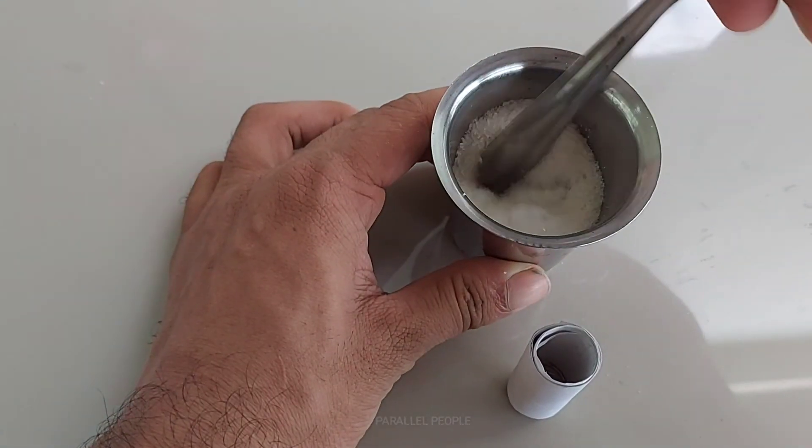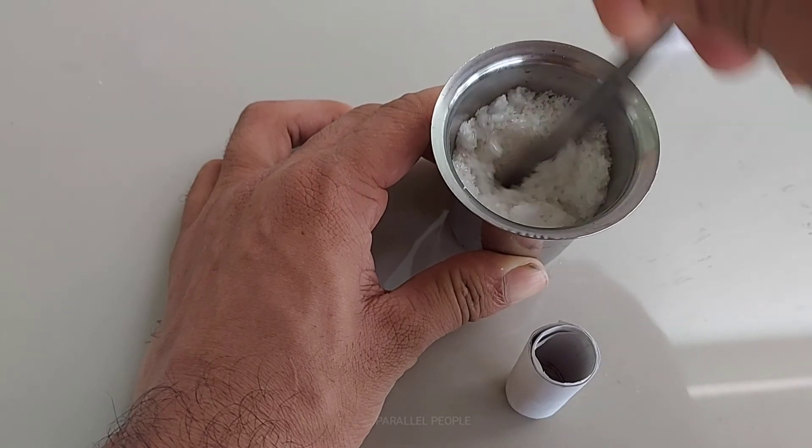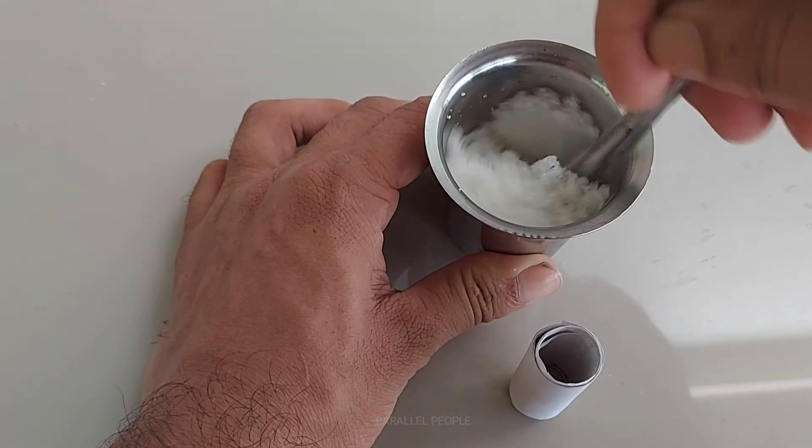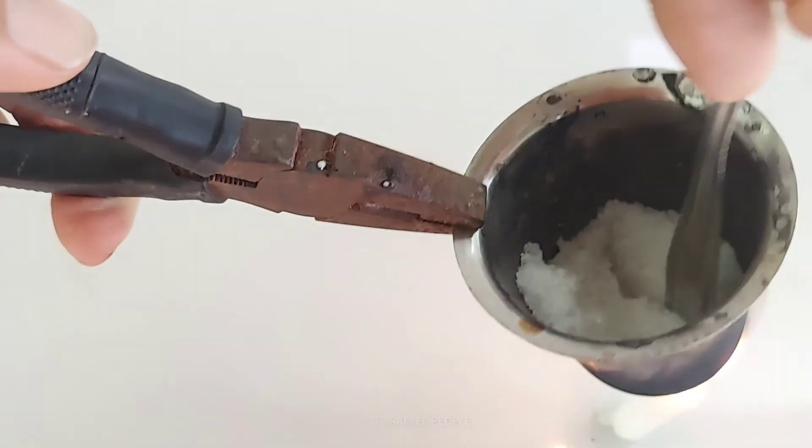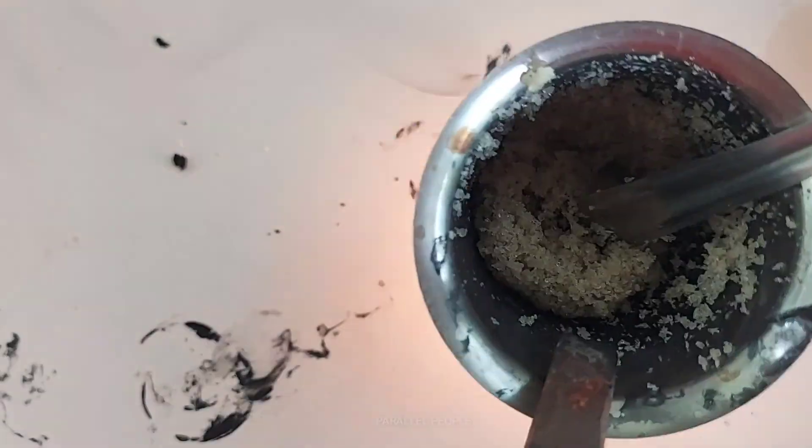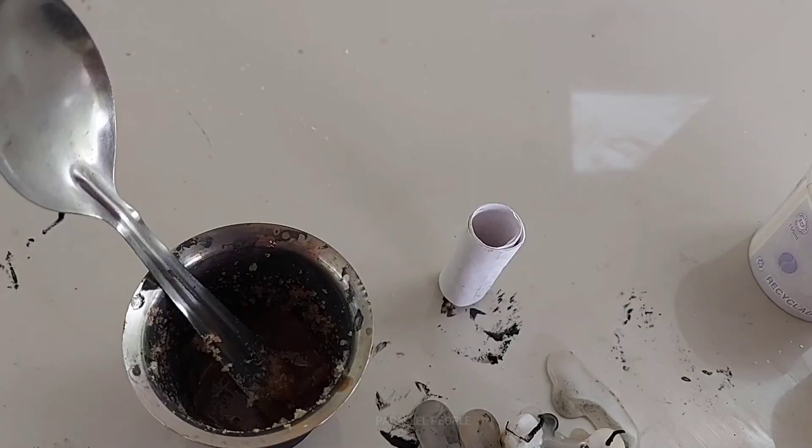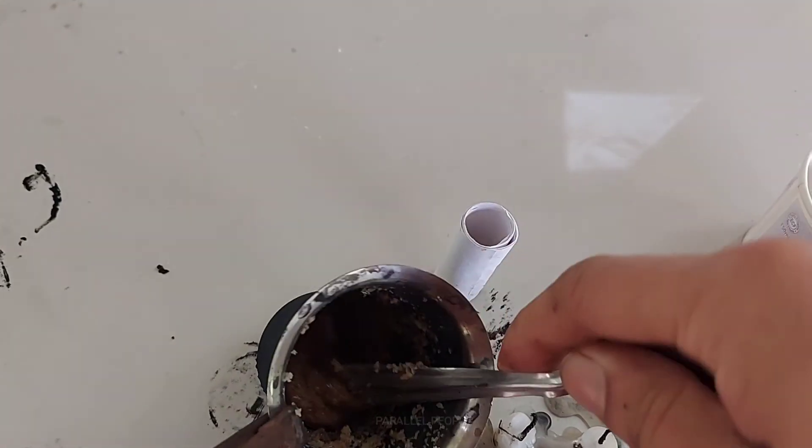After mixing these two ingredients, we need to heat it up. By heating it up, we can see the sugar is caramelizing and sticking the potassium nitrate into it. By doing this, we get an even paste-like mixture that is very useful for propulsion.